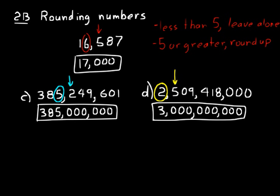Something to think about here: we rounded up almost 500 million, because we had two billion five hundred and nine million. When that arrow-marked digit is a five, rounding up gives you quite a different number. So if you're using this to estimate something, rounding up like that sometimes is not a great idea — you get such a different number. But right now we're just getting practice with rounding. Remember the rules: if the arrow-marked digit is less than five, leave the circled digit as it is; if it's five or greater, round the circled digit up one. That's all for lesson two.